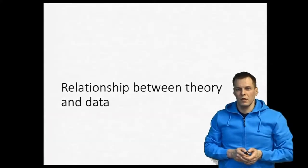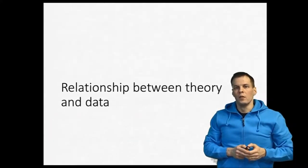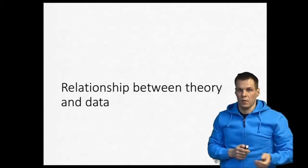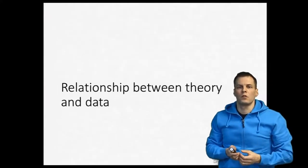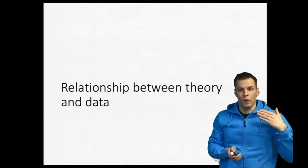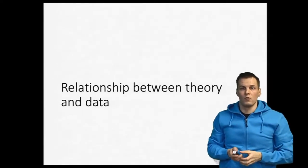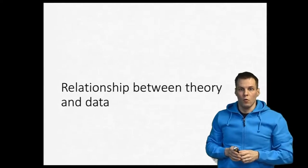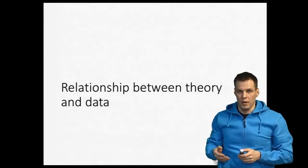In research we are quite often interested in theory, and in quantitative research we use numbers to either develop or justify theory. To understand the relationship between theory and data, we need to start by defining what we mean by the term theory, and we also need to understand a little bit of philosophy to know why and how using numbers to justify theory is a justifiable way of doing research.